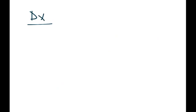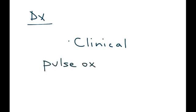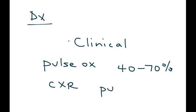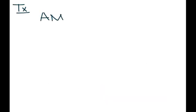Diagnosis of these illnesses is really just clinical, because you're usually on the mountain and can't get all diagnostic testing done. However, if you have a pulse oximeter handy, you can check pulse ox quickly — it will show about 40 to 70 percent, which is quite low (normal is usually greater than 90). If you did have a chest X-ray, in HAPE you would see pulmonary edema.